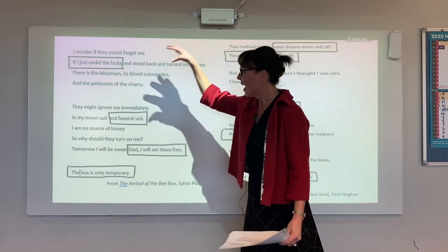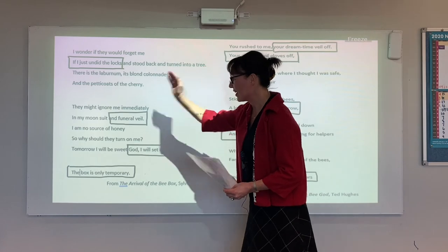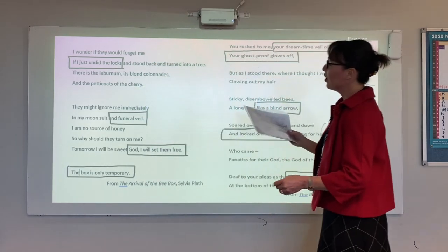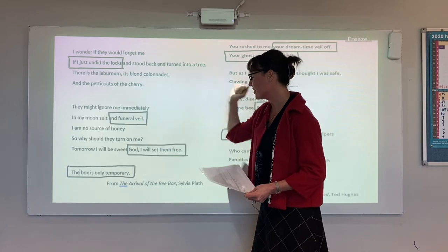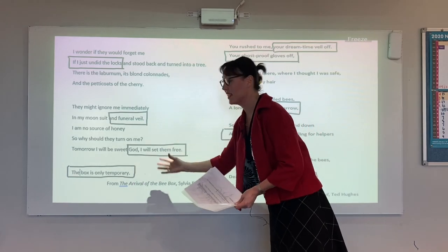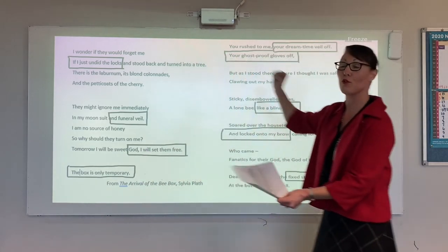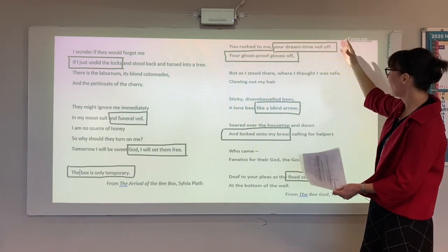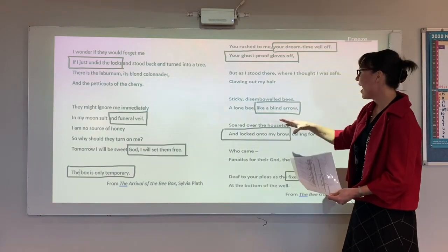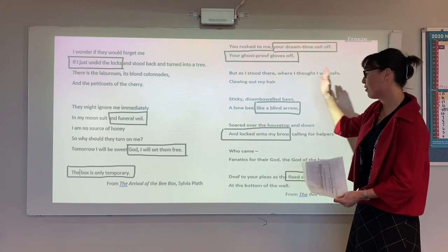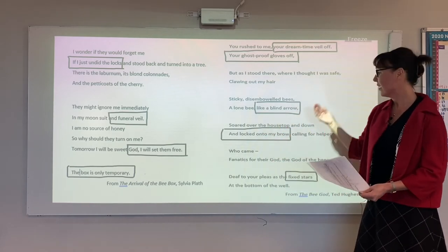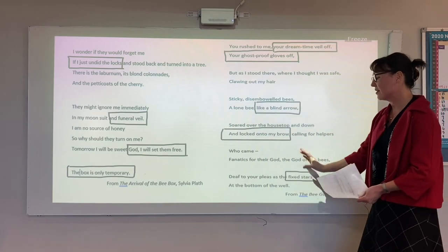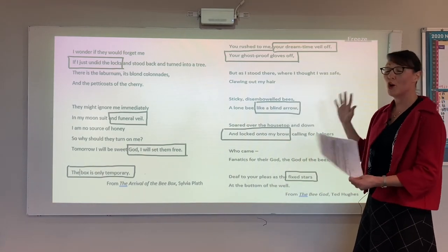It's asked you to tap into images, so draw boxes around images that stand out to you that fit your thesis — these ideas of containment with the idea of locks, the funeral veil, the image of suffering, the idea of liberation and the box only being temporary. So there's your thesis in those four great images. Then in Hughes recasting the veil, he's recasting these ideas of veils as disguises or facades, needing them to strip off — as we've got 'the veil off, the gloves off, the blind arrow locked onto my brow' — this idea that his images now pertain to him and his sense of entrapment and being as fixed as the stars, this idea of fate.